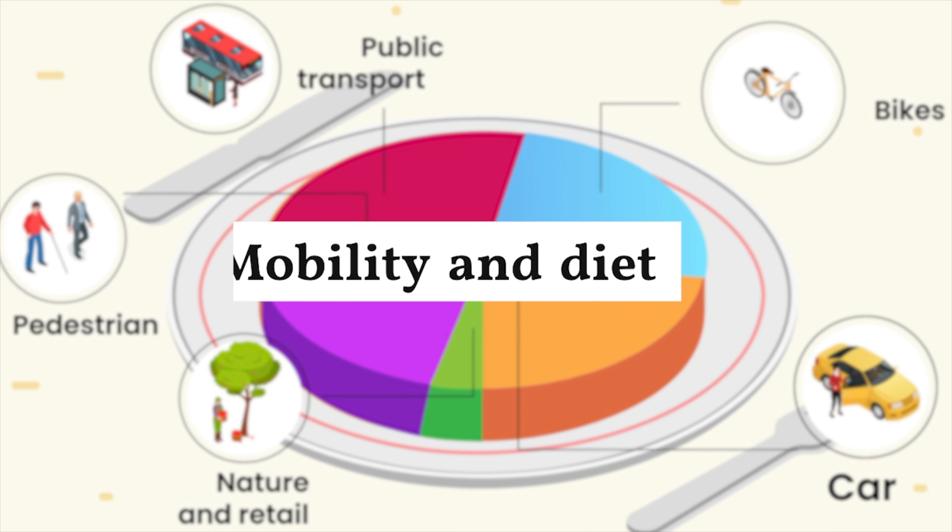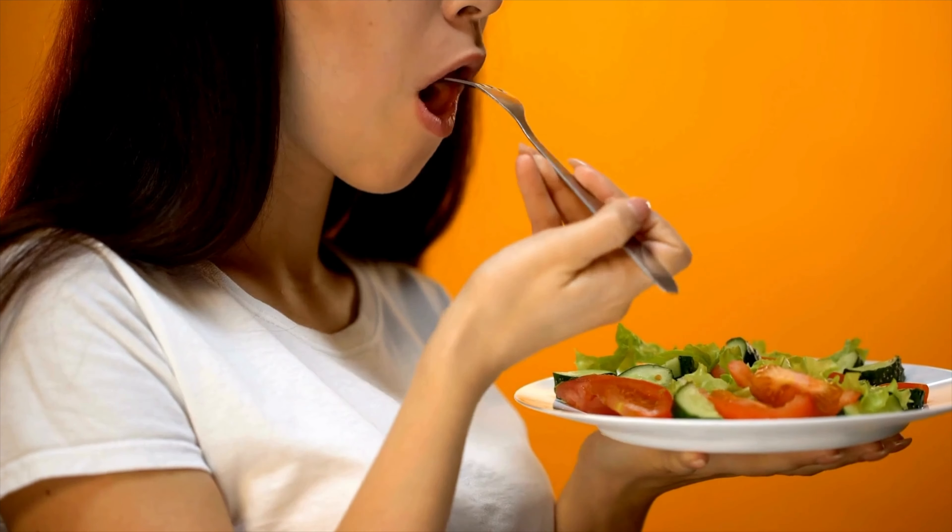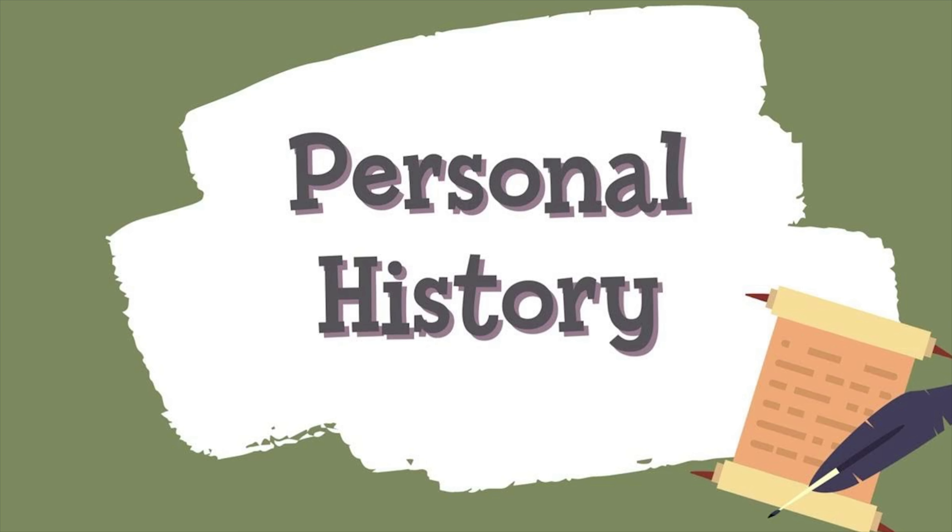We know about patients who are following a healthy diet. We know about diet and family support. We also ask about smoking and regular alcohol use, as these are very personal aspects of the social history.